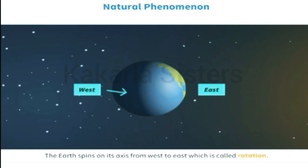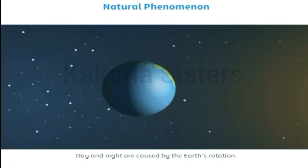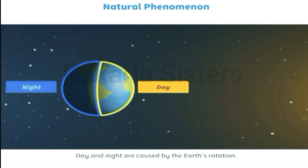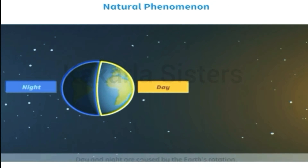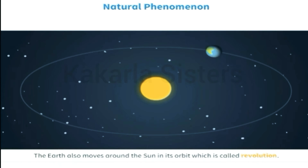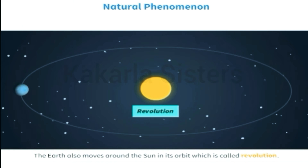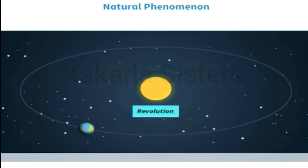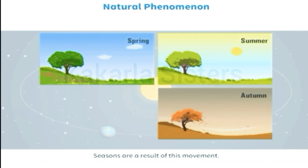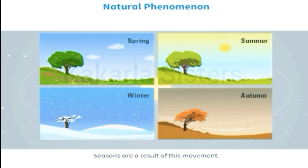The earth spins on its axis from west to east, which is called rotation. Day and night are caused by the earth's rotation. The earth also moves around the sun in its orbit, which is called revolution. Seasons are a result of this movement.